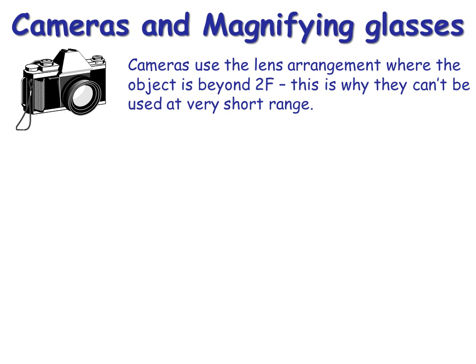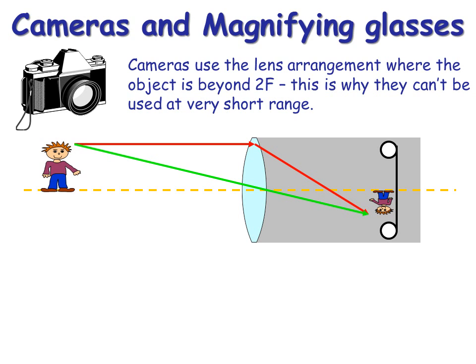And finally, a couple of applications. Cameras use convex lenses. And as you can probably imagine, the image has to be much smaller than the object. And therefore, the lens arrangement is such that the object must always be beyond 2F. And therefore, you can't focus in on very, very close objects.